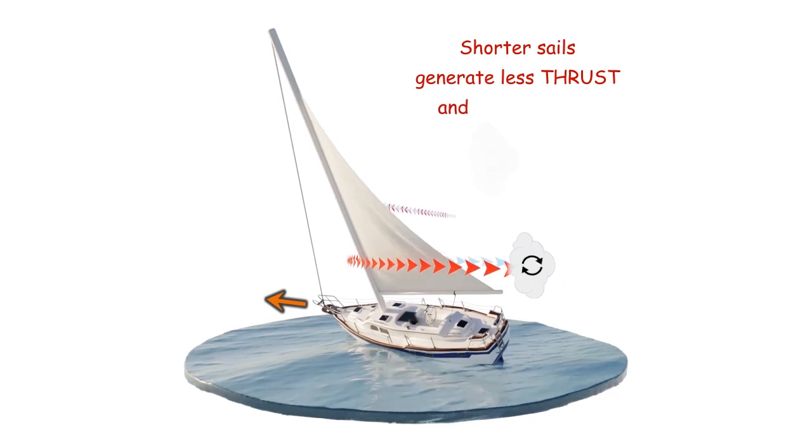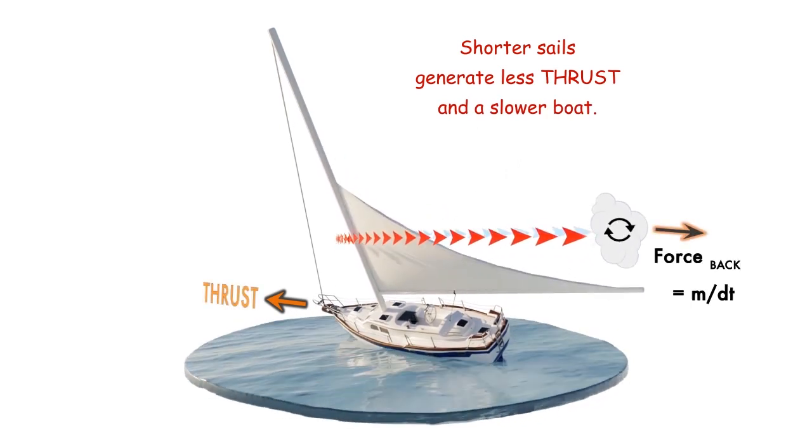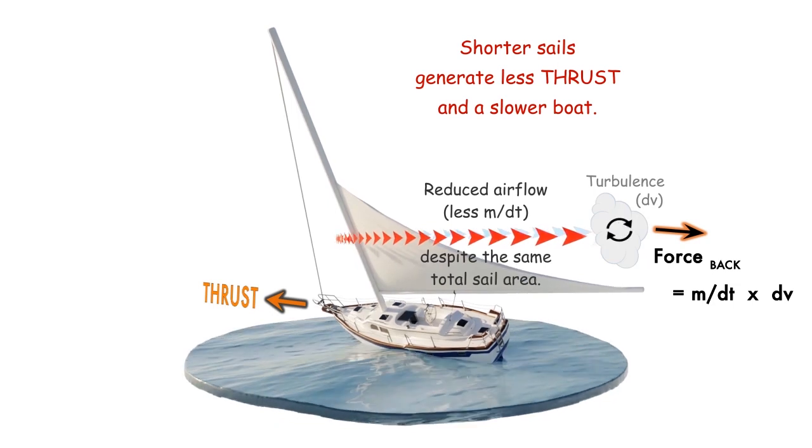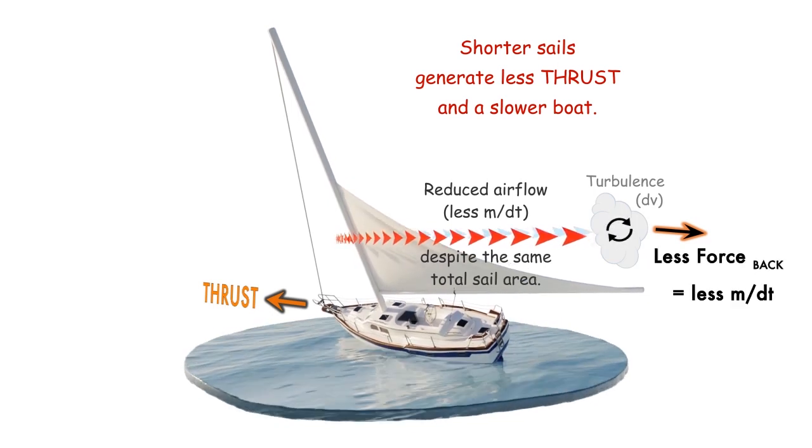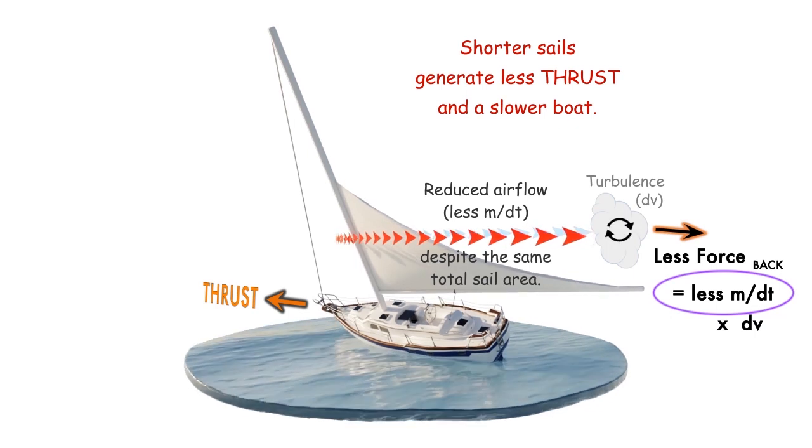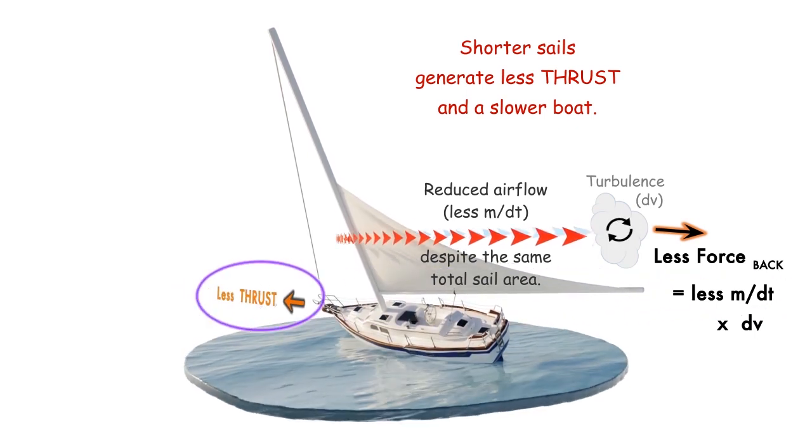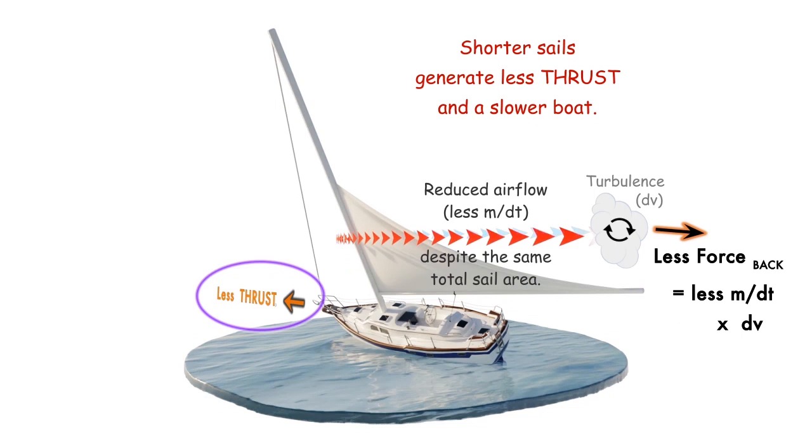On the other hand, shorter sails reduce the sail exposed to the wind, and therefore reduce the air flows created by the sail, even if the total sail area stays the same. Less airflow reduces the forward thrust generated, causing the boat's speed to slow.